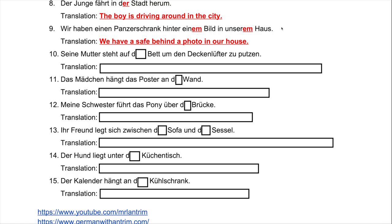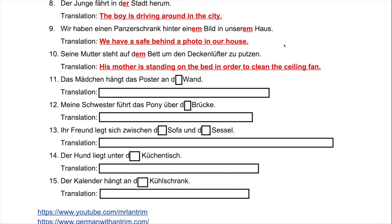Number ten: 'Seine Mutter steht auf ___ Bett um den Deckenlüfter zu putzen.' 'Stehen' means already being in a standing position, as opposed to 'stellen' which means placing something into a standing position. His mother is standing on the bed — she is already there, so we use dative. 'Bett' is neuter, so 'dem Bett.' Answer: 'Seine Mutter steht auf dem Bett um den Deckenlüfter zu putzen' — his mother is standing on the bed in order to clean the ceiling fan.